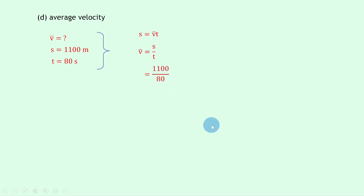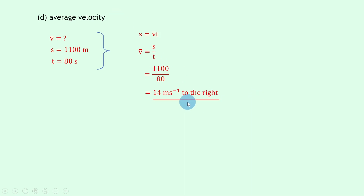Substituting in the numbers: 1100 ÷ 80 = 14 m/s to the right. Remember to include the direction because velocity is a vector. That's all for this video — thanks for watching. If you made it to the end I really appreciate it. Make sure to like the video, subscribe to the channel, and I'll see you in the next one. Take care.